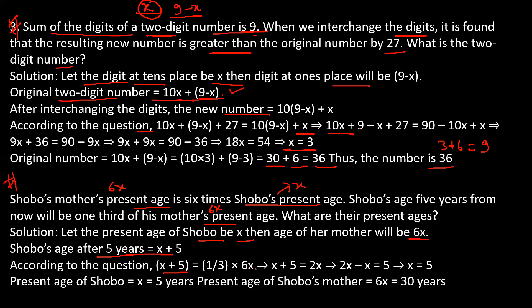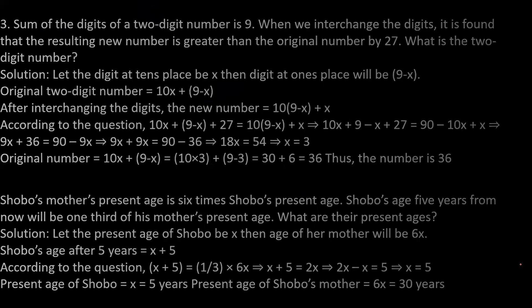So x plus 5 equals 2x. Therefore 2x minus x equals 5, so x equals 5. Soboz's present age is 5 years and mother's present age is 6 into 5, means 30 years.